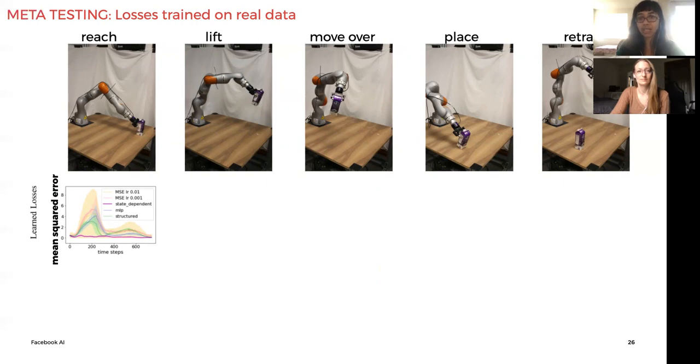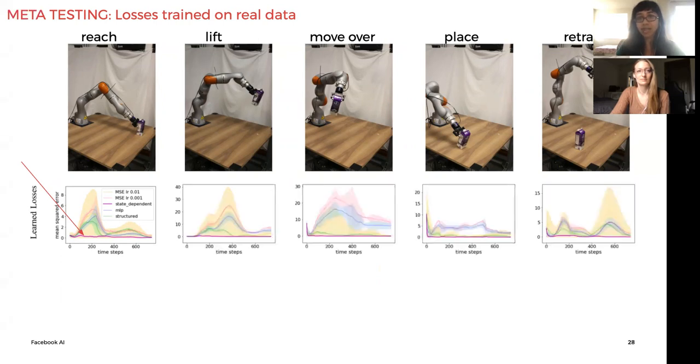We show that, amongst all, the controller or model trained with the state-dependent loss has the flattest curve and the lowest error, which means that it adapts significantly quickly to the online data stream as compared to all the other losses. This is true for all the motions of the task.